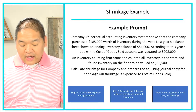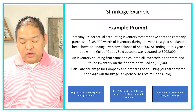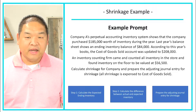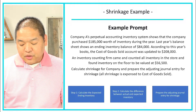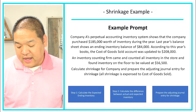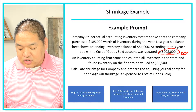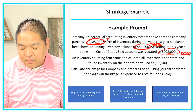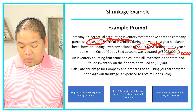Company A uses a perpetual inventory system which shows that the company purchased $185,000 worth of inventory during the year. Last year's balance sheet shows an ending inventory of $84,000, which becomes this year's beginning inventory. According to this year's books, the cost of goods sold was updated to $208,000. So $208,000 is cost of goods sold, $84,000 is beginning inventory, and $185,000 is purchases for the period.